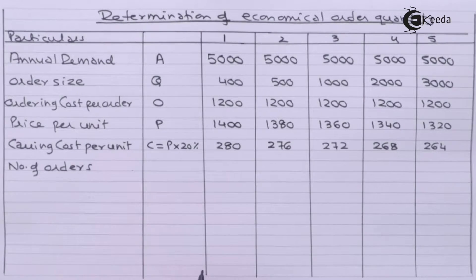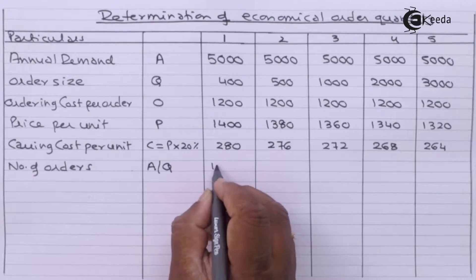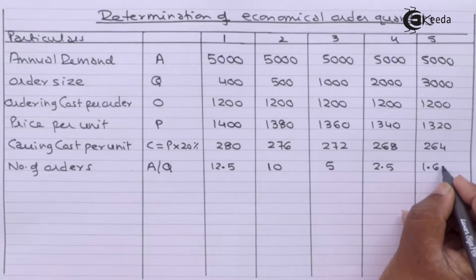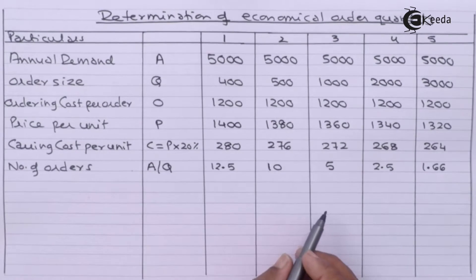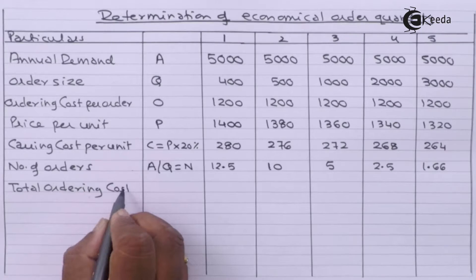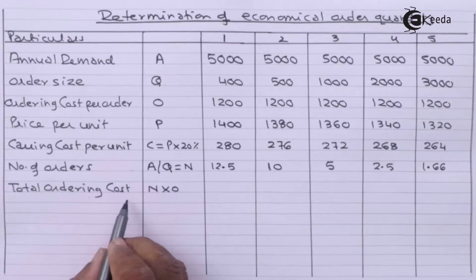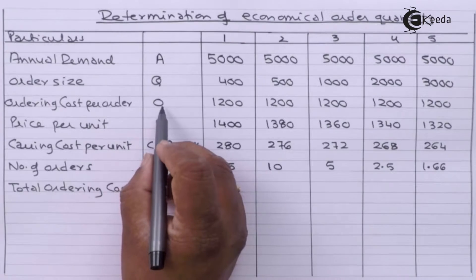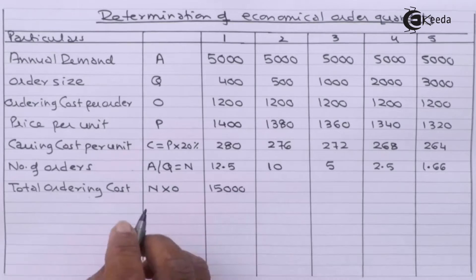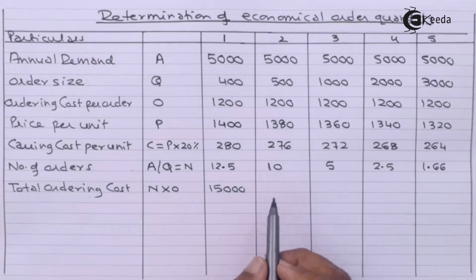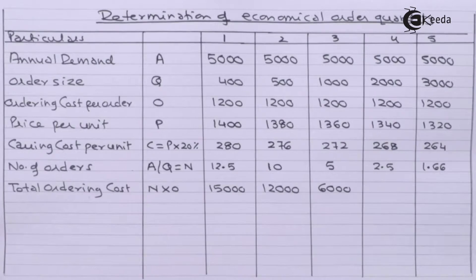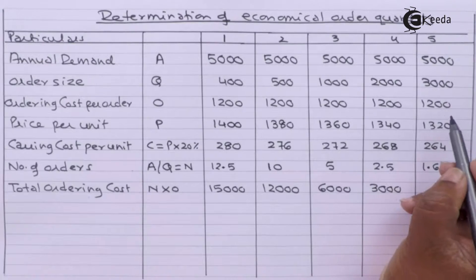Next, number of orders = annual demand divided by order quantity. Then total ordering cost = number of orders multiplied by ordering cost per order. So it will be: 1200 × 12.5 for 400 tons; 1200 × 10 for 500 tons; 1200 × 5 for 1000 tons; 1200 × 2.5 for 2000 tons; and 1200 × 1.66 for 3000 tons.